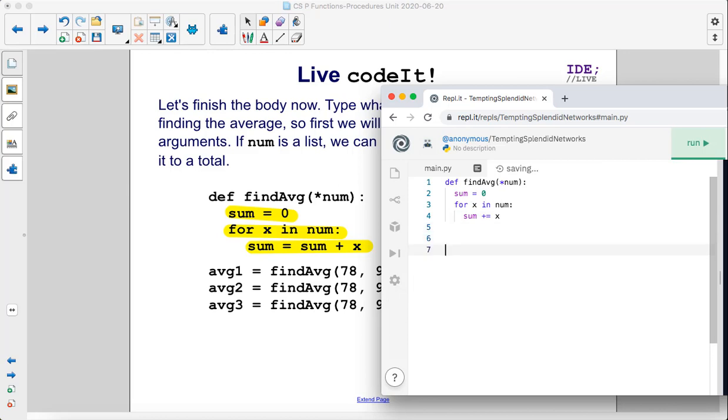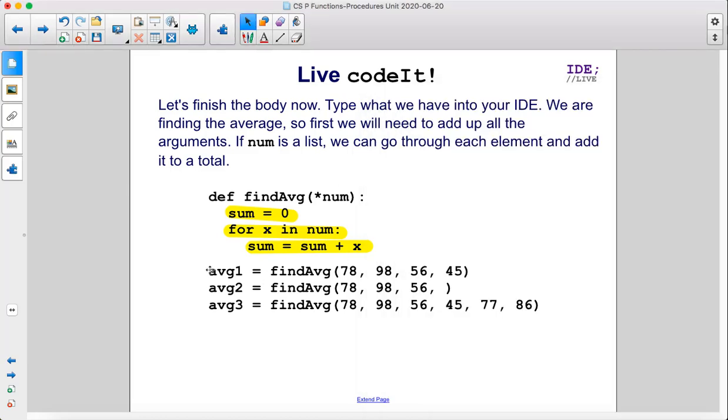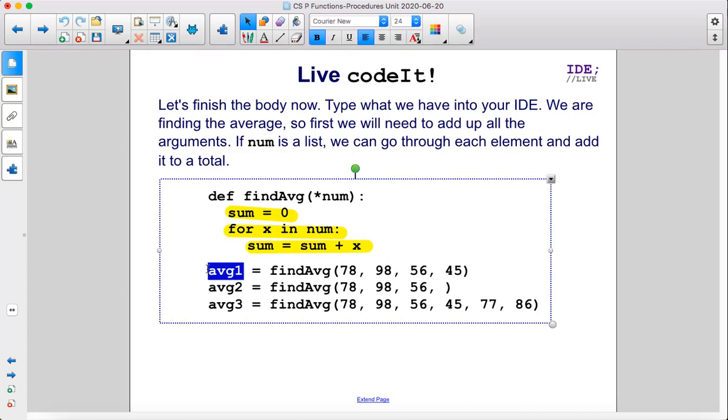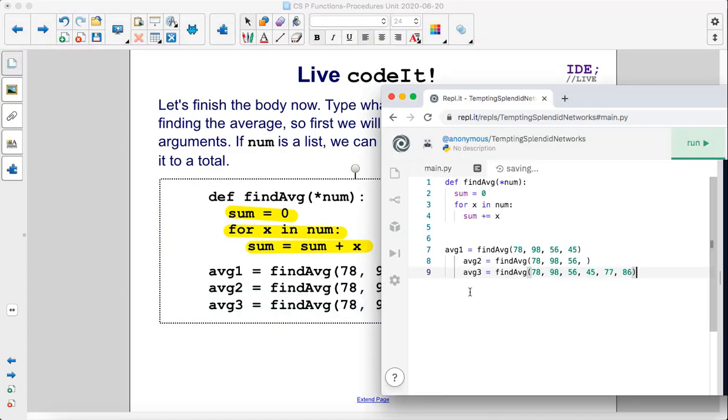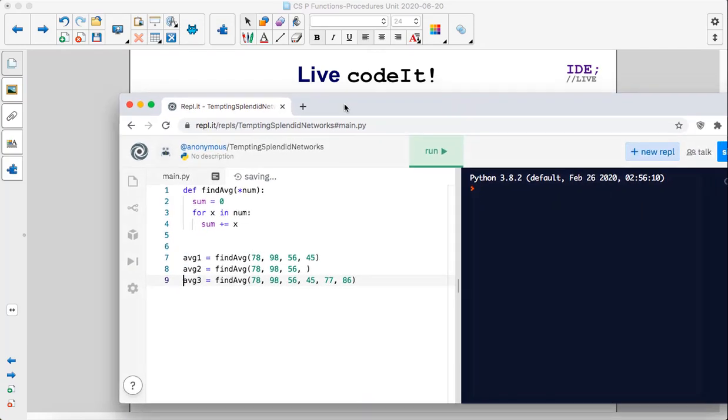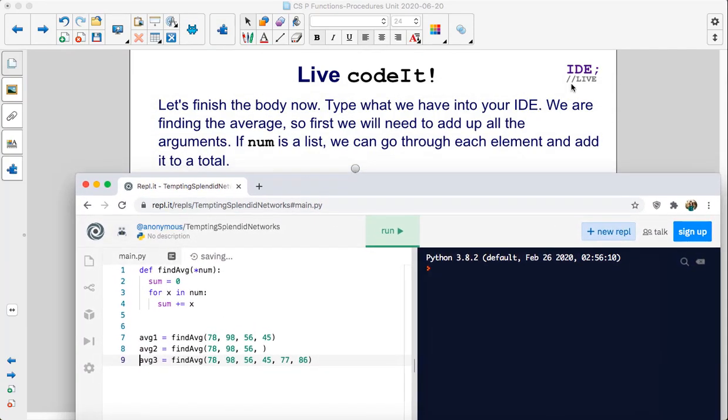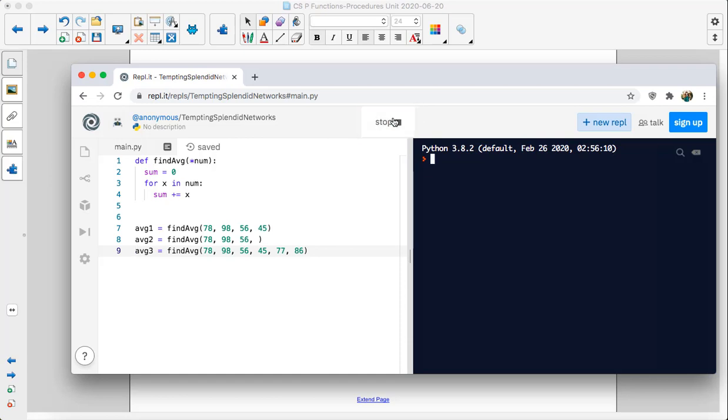Then we're going to call the function. So I'm just going to copy and paste these. Take out those indents. So we're finding the average. First we will need to add up all the arguments and that's what we do here. If num is a list, we can go through each element and add it to a total and that's what we're doing when we're looping through. We run this. Well, there's no print statements. So it worked with no errors, but let's continue.